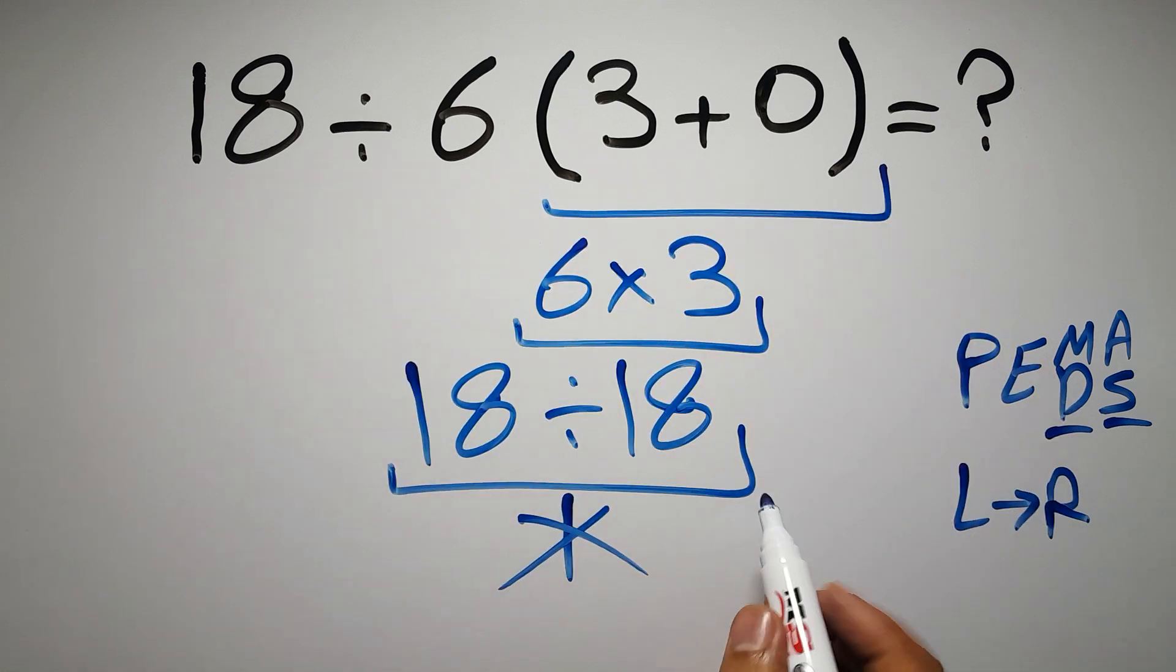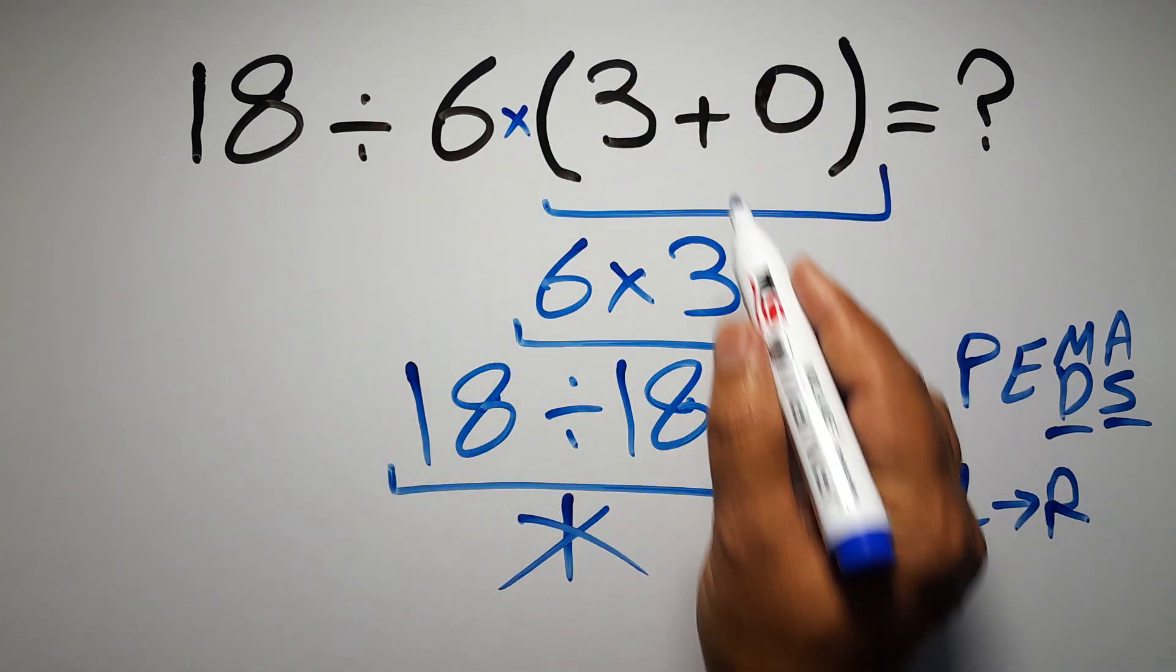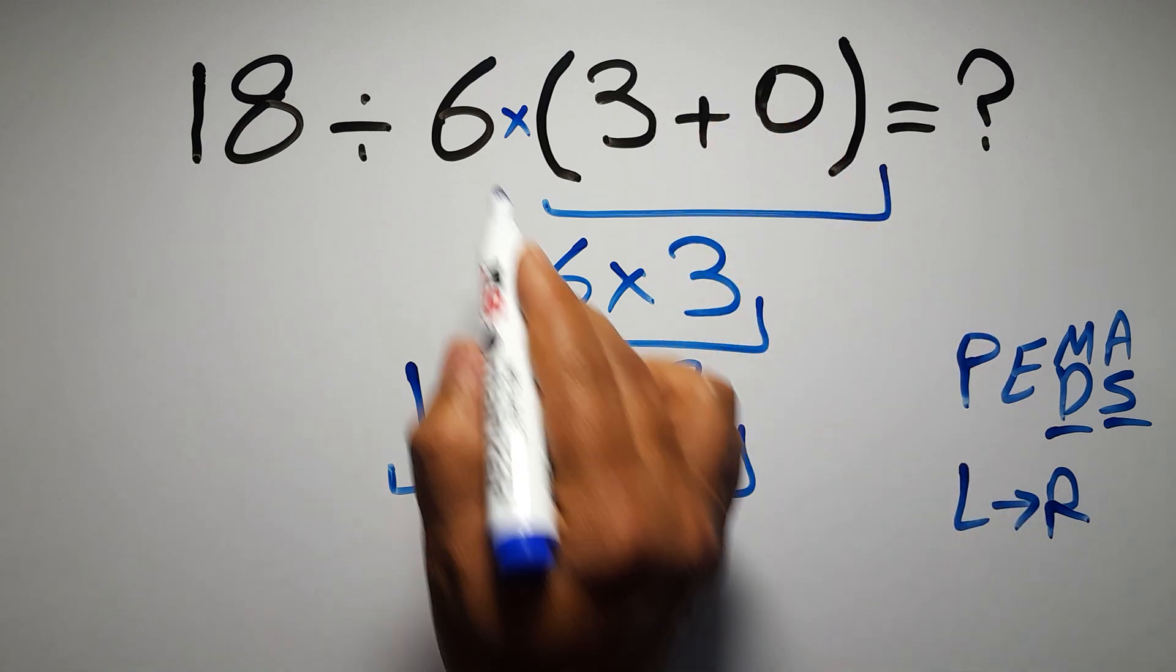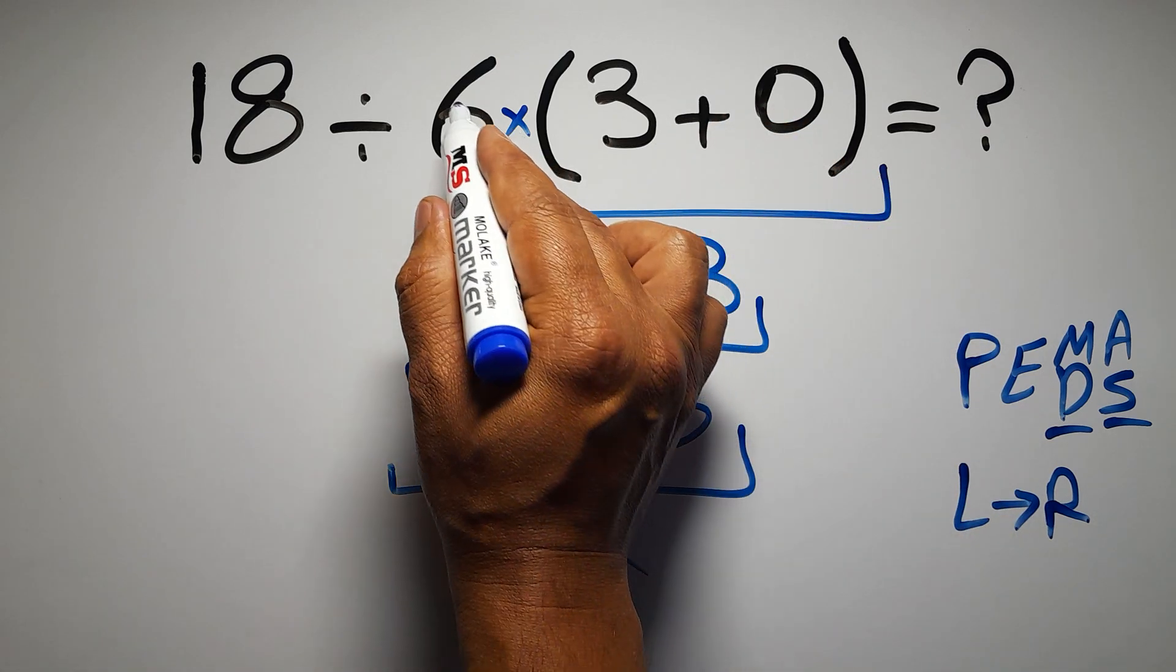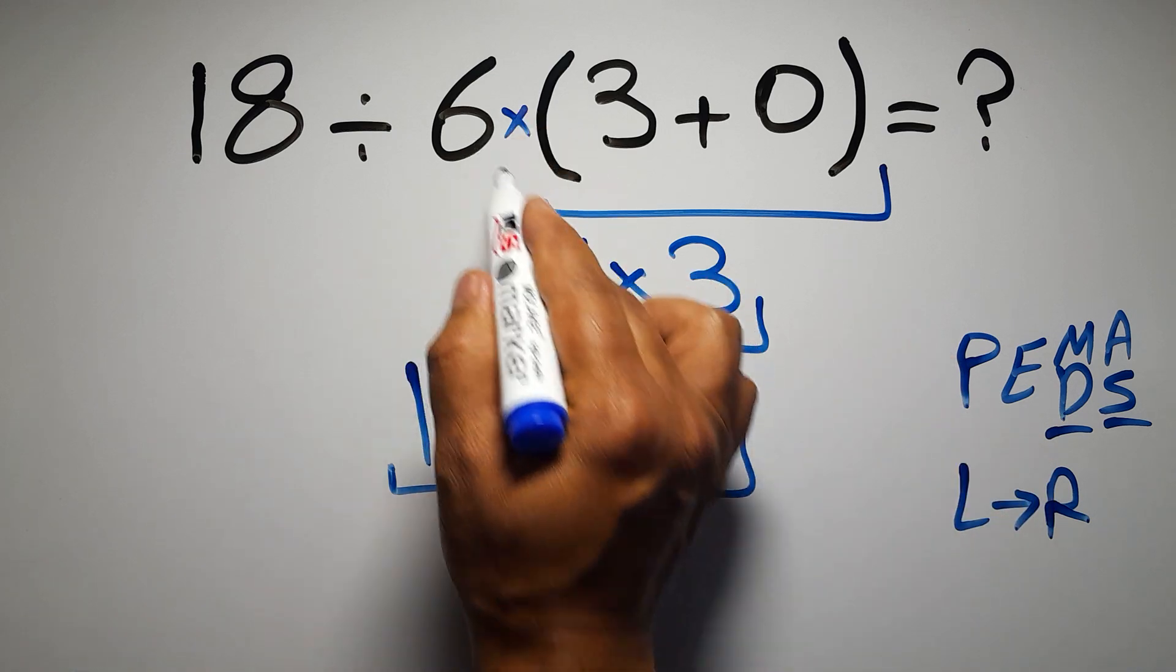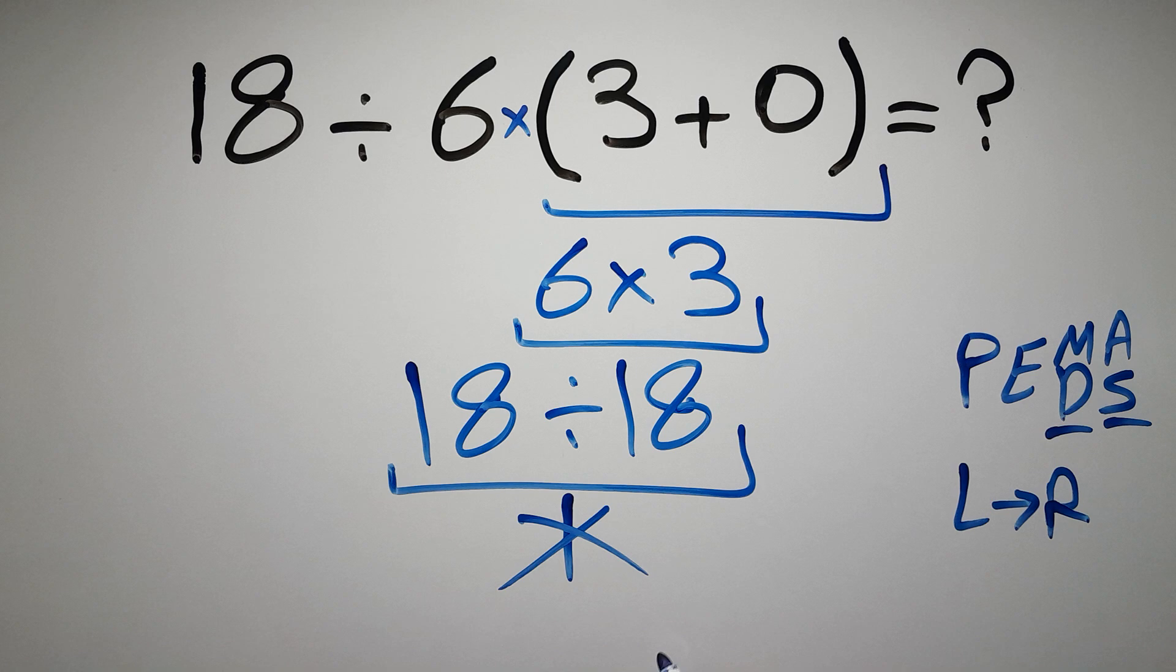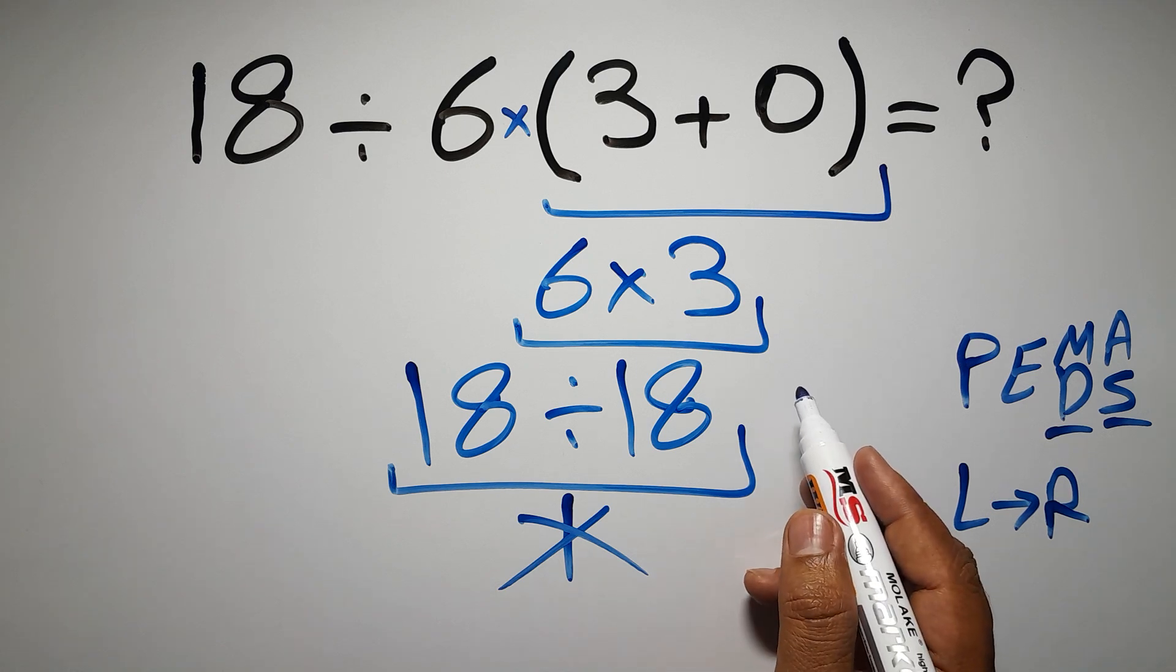In this expression, we have one division, one multiplication, and one parentheses. Inside these parentheses, we have one addition. Here we have a multiplication, because in mathematics, when a number is placed next to parentheses, it means multiplication, and we usually don't write the multiplication sign for brevity.